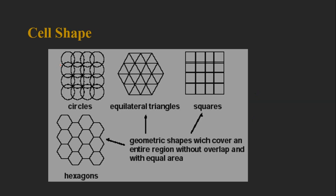If we consider a circle as the cell shape, covering every region creates overlapping areas where interference occurs. Even if we separate the circles by some distance, there will be gaps producing blank zones with no coverage. So the circle is not a good option. If we consider a triangle, we can cover every area with no blank zones.